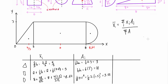To simplify the equation we add a column to the table for x_i × A_i. For the triangle: 4/3 × 3 = 4. For the square: 5 × 18 = 90. For the semicircle: 8.64 × 3.53 ≈ 30.5. We could do all of this in the equation, but organizing it in the table makes it a bit easier.